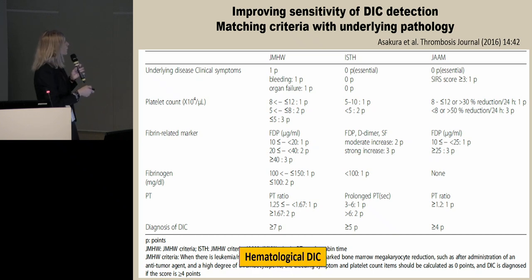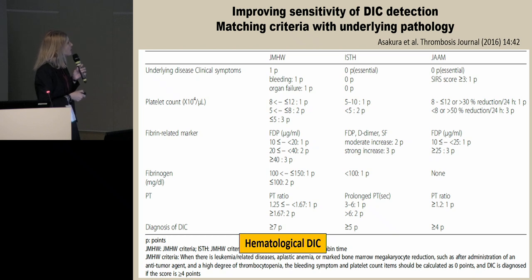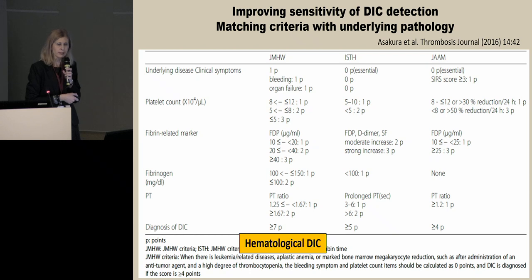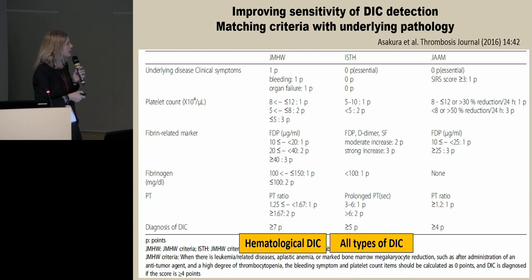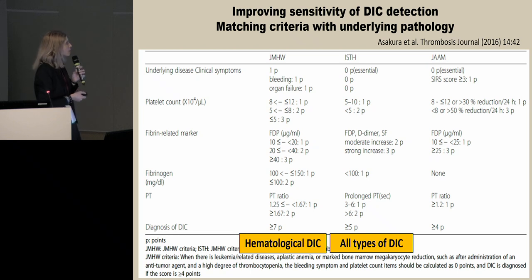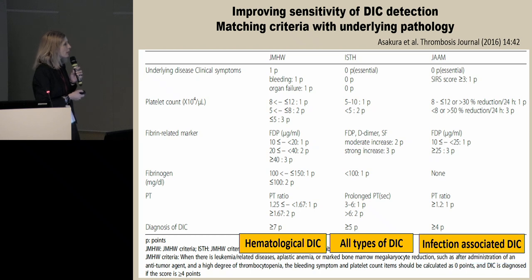We have the scoring system from the Japanese Ministry of Health, Labor and Welfare, which is appropriate for patients with hematological malignancy. The ISTH scoring system is good for all types of DIC but has lower sensitivity — it may miss the diagnosis in some patients. The Japanese Association of Acute Medicine (JAAM) scoring system is appropriate for infection-associated DIC with sepsis, and it includes the SIRS score.